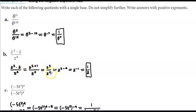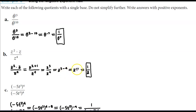Now that we have z to the third power in the numerator and z to the fourth power in the denominator, we're going to subtract the exponents since we're dividing with the same base. So this becomes z to the power of 3 minus 4, which is equal to z to the negative 1. We don't want to leave negative exponents, so we're going to write that as a reciprocal. So it's going to equal 1 over the base of z with a positive exponent of 1.